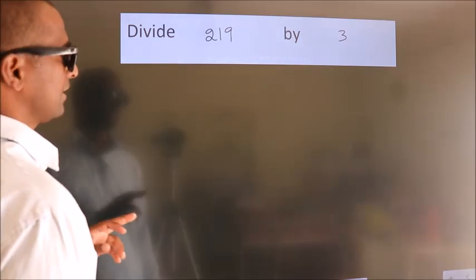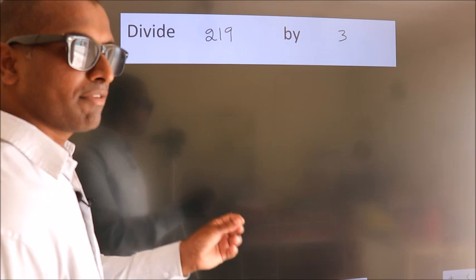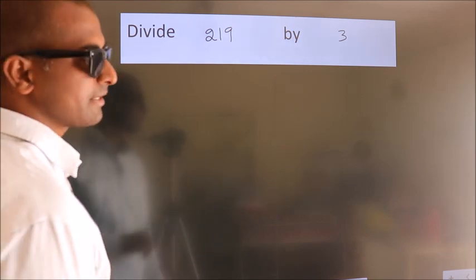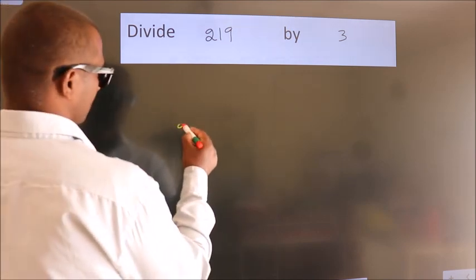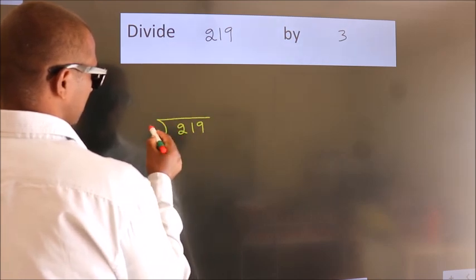Divide 219 by 3. To do this division, we should frame it in this way: 219 here, 3 here.